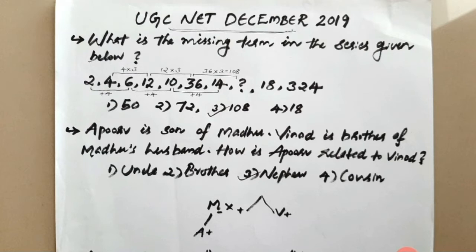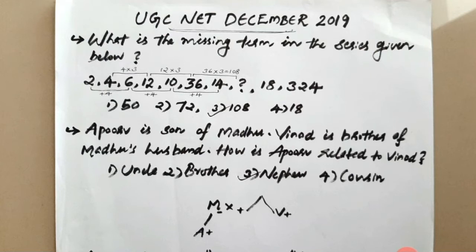Now, 4 into 3 is 12, then 12 into 3 is 36. Then 36 into 3 — what is it? It will be 108. Then pick that one. By applying the multiplication by 3 logic, if you confirm that the answer is 324, then we will answer 324 — the third option.